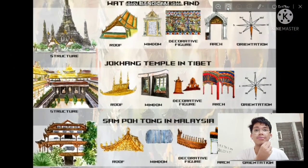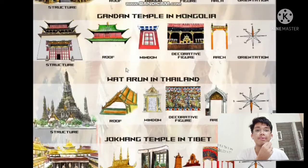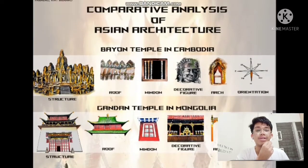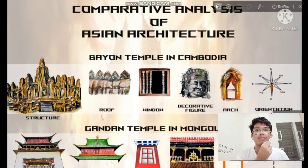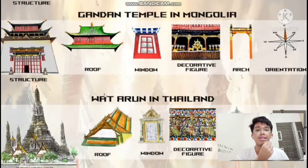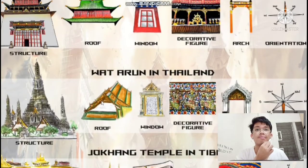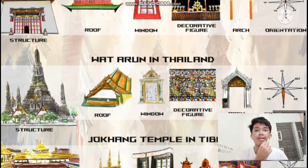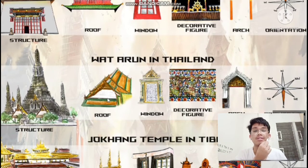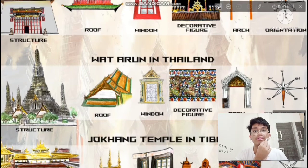The Bayon Temple roof is made up of sandstone, bricks, and laterite. The Wat Arun roof is characterized by a gable roof with a central spire, decorated in colored ceramics. The decorative elements attached on the edge of the roof's gable is called padlom, or barge board.